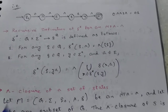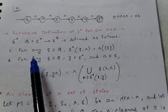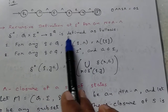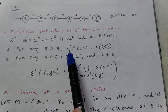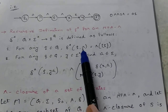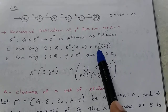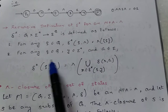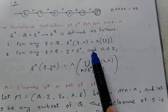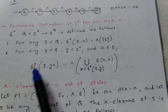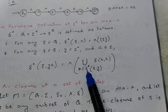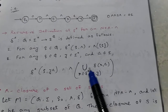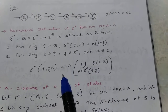Next, the recursive definition of delta star for NFA epsilon. Delta star from Q to sigma star to two power Q is defined as follows: for any q belonging to Q and sigma star, delta star of q comma epsilon is equal to epsilon closure of q. For any q in Q, y in sigma star, and a in sigma union epsilon, delta star of q comma ya equals epsilon union of r belonging to delta star of q comma y of delta r comma a.